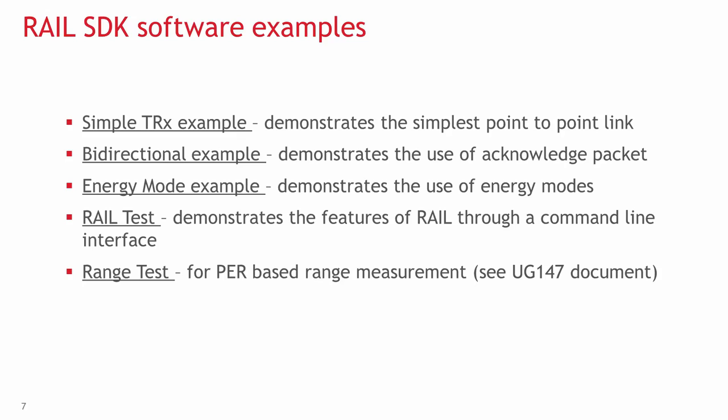The RAIL test exposes all RAIL library features via a command line-driven UART interface and is also used for lab evaluation. The range test enables over-the-air packet error rate-based range measurement between two devices, customized with user-defined parameters. Additional examples are planned for future releases.